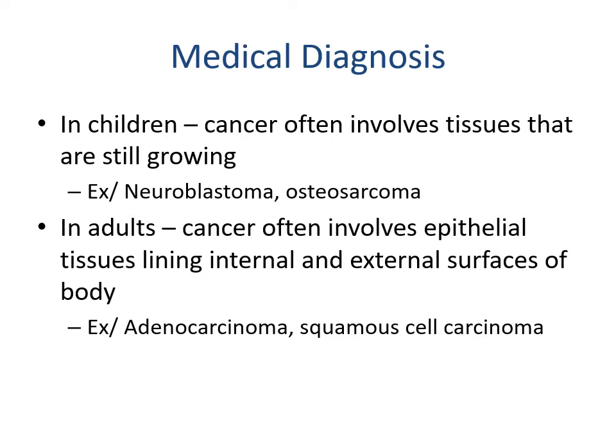In children, cancer often involves tissues that are still growing — such as neuroblastomas and osteosarcomas in bone tissue or nerve cells. In adults, cancers often involve epithelial tissues lining internal and external body surfaces, such as adenocarcinoma and squamous cell carcinoma.